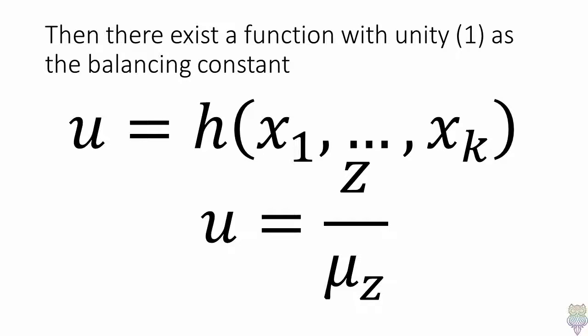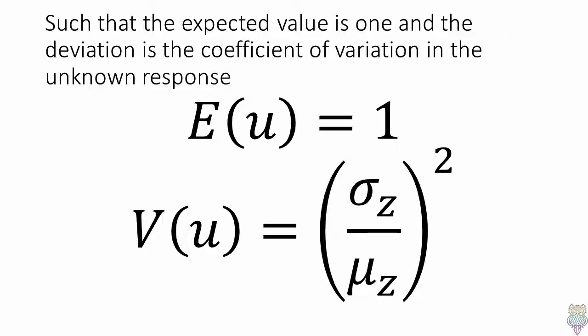Hence, we can find a function such that unity, or 1, is the balancing constant to this equation. The expected value of unity is 1, and the variance of unity is the covariance of the unmeasured variable.